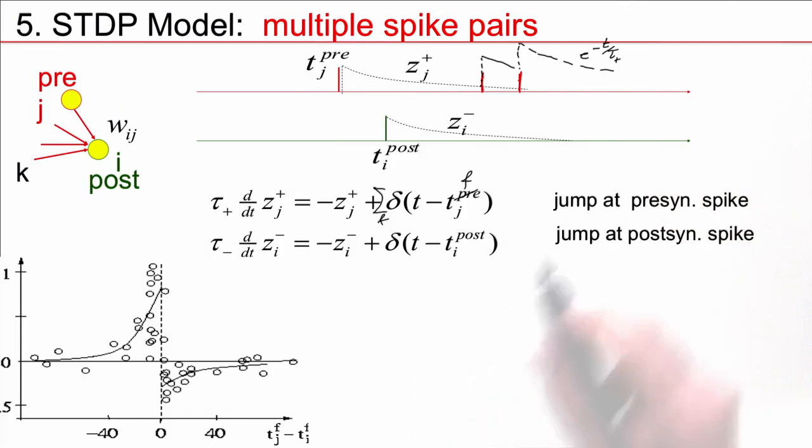Similarly, for the postsynaptic trace, if there are many postsynaptic spikes, then at each spike the trace will increase, and afterwards it will decay with a time constant tau_minus.